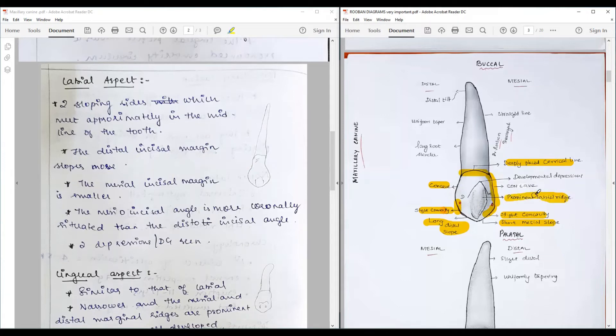Has a slight convexity in the contact area, then after has a concavity. So cervical line, mesial outline concave, then slight concavity forming the short mesial slope, then long distal slope, slight convexity, then concavity to join. This is the distal outline. The entire buccal surface is made up of a prominent labial ridge causing two developmental depressions on either side, mesial and distal. Prominent cervical or labial ridge.